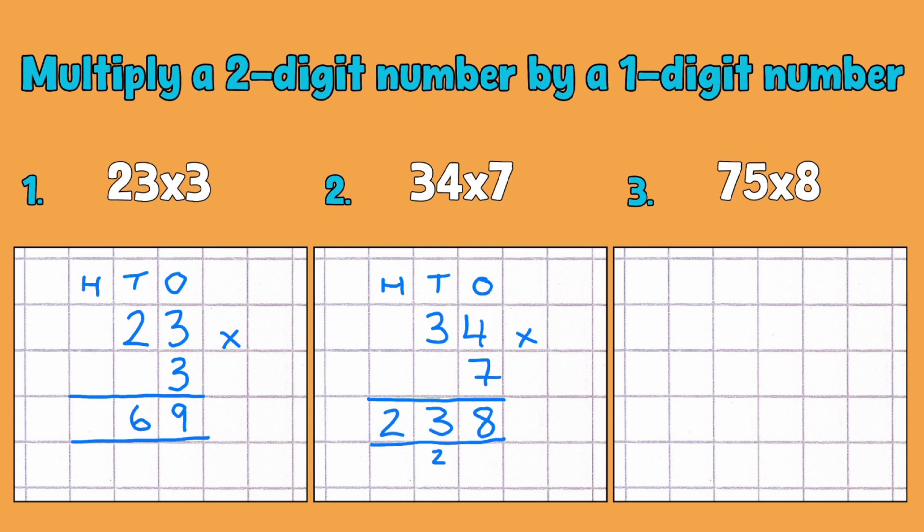So because in reality we've got tens and ones that we're multiplying by, we actually have 30 and 4. So the 3 isn't just a 3, it's actually 30 so it's 10 times larger. So therefore that means that we've actually multiplied 30 by 7 and then we've multiplied 4 by 7 and put those together.